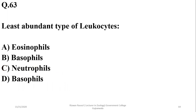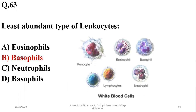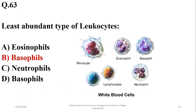Question number 63: The least abundant type of leukocytes are basophils, which are even less than 1%. The most abundant are neutrophils, which are almost 62% of total white blood cells.